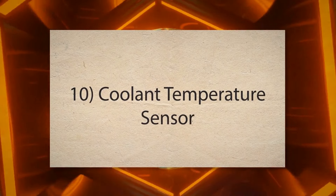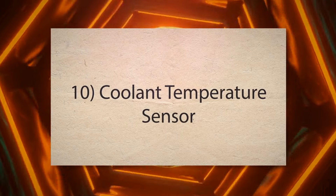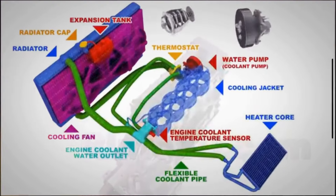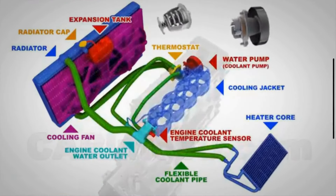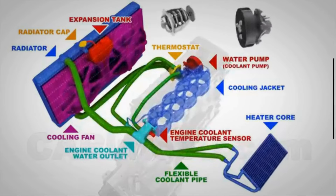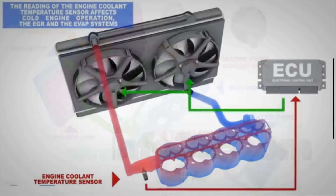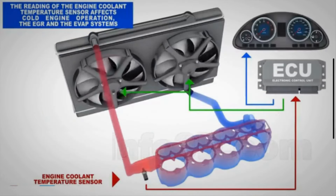10. Coolant Temperature Sensor. The coolant temperature sensor provides data on the engine's temperature. If it sends incorrect information, then your engine control unit might make improper adjustments to the air-fuel mixture, which causes idle fluctuations, especially when the engine is warming up.